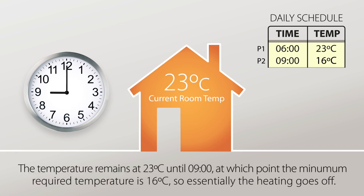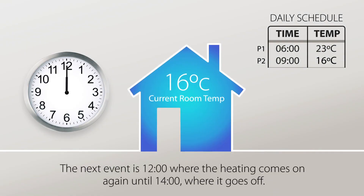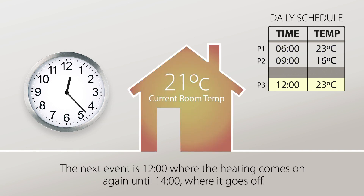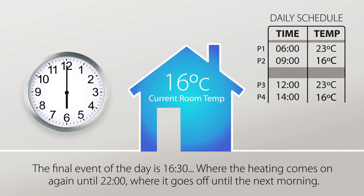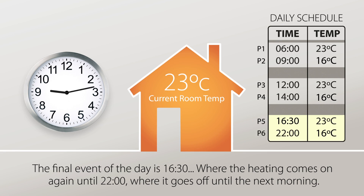The next event is lunchtime. Programme 3 is the next on time and temperature, and Programme 4 is the next off time and temperature. The heating comes on at midday until 2 p.m. The last event is afternoon or evening. Programme 5 is the next on time and temperature, and Programme 6 is the final off time and temperature of the day. The heating comes on at 6 p.m. until 10 p.m.